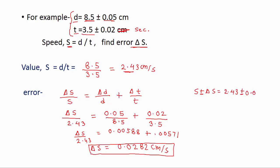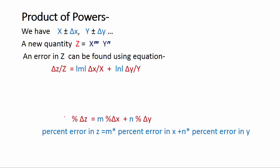So we can write our answer as s plus-minus delta s equals 2.43 plus-minus 0.0282 m/s.